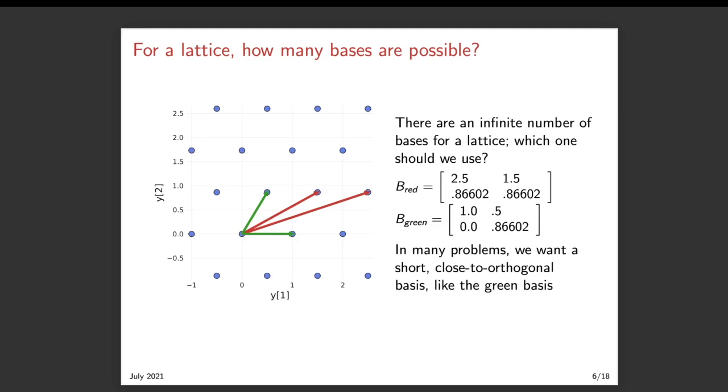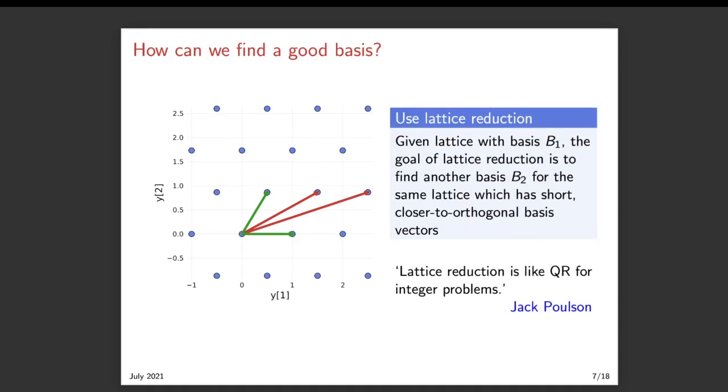There are an infinite number of bases for a lattice. Here, the red arrows illustrate the columns of the B-red matrix. And the green arrows illustrate the columns of the B-green basis matrix. In many problems, we want the short, close to orthogonal basis like the green one. And this process of going from a not-so-great basis matrix to a better basis is called lattice reduction.